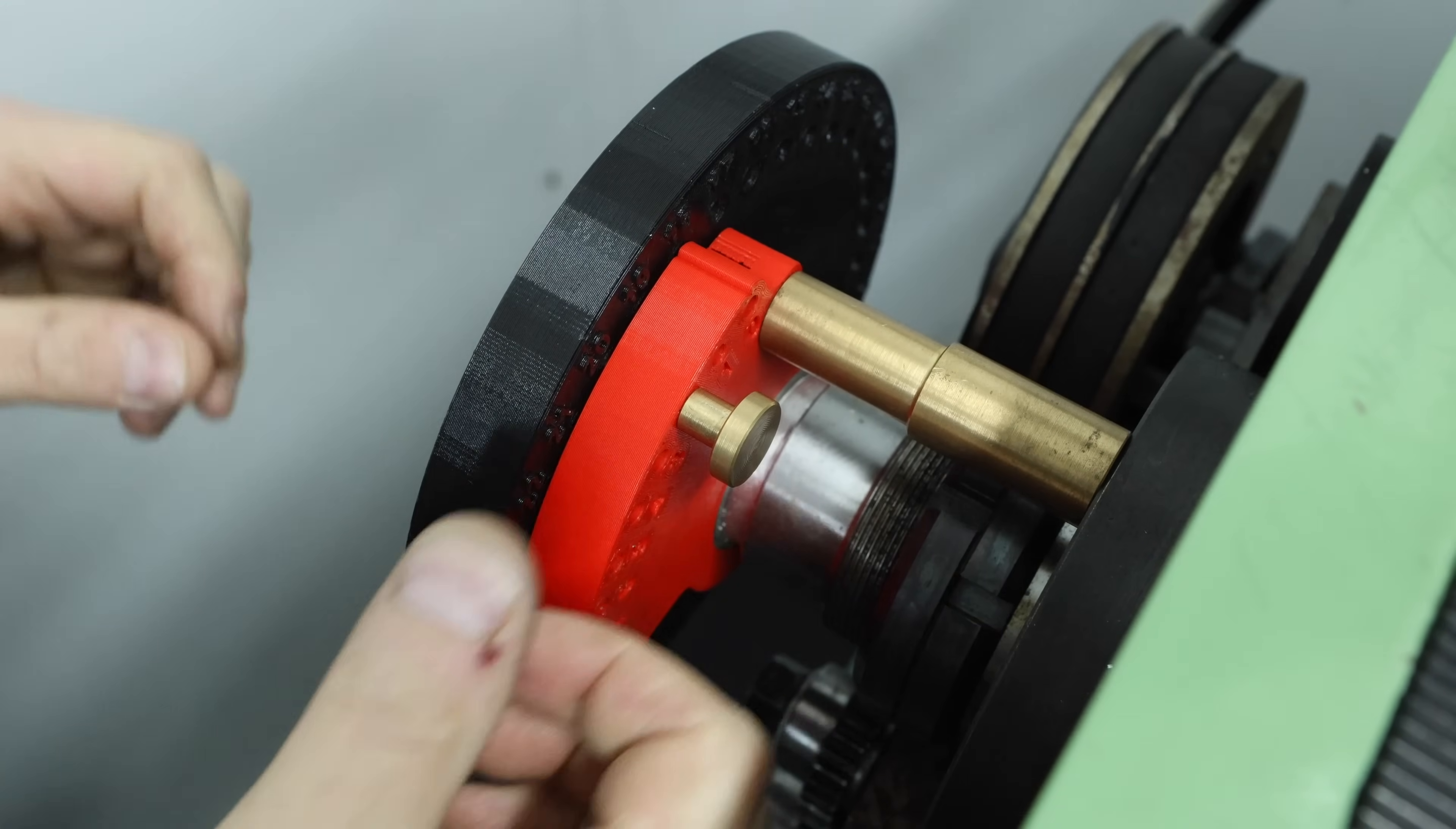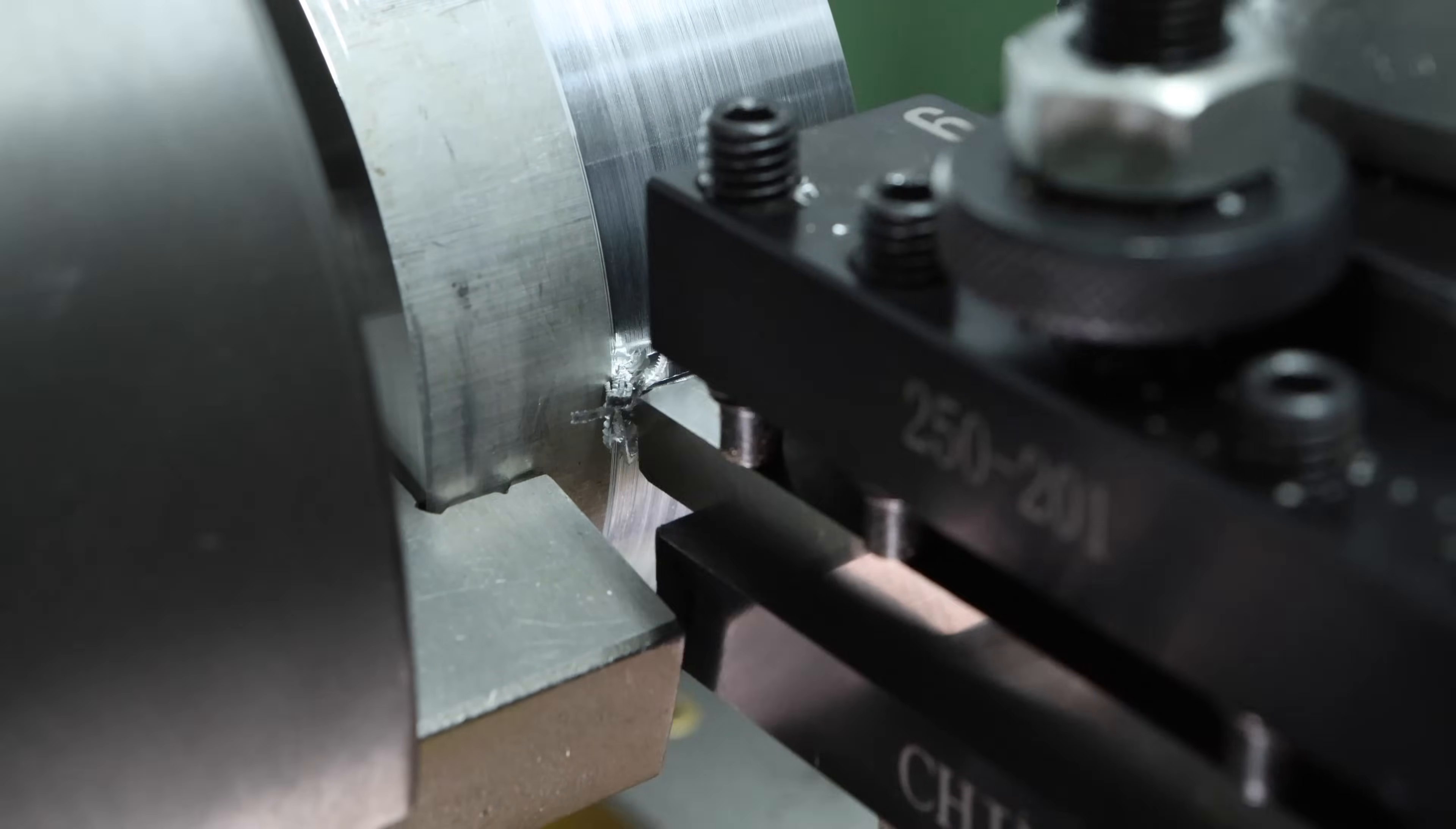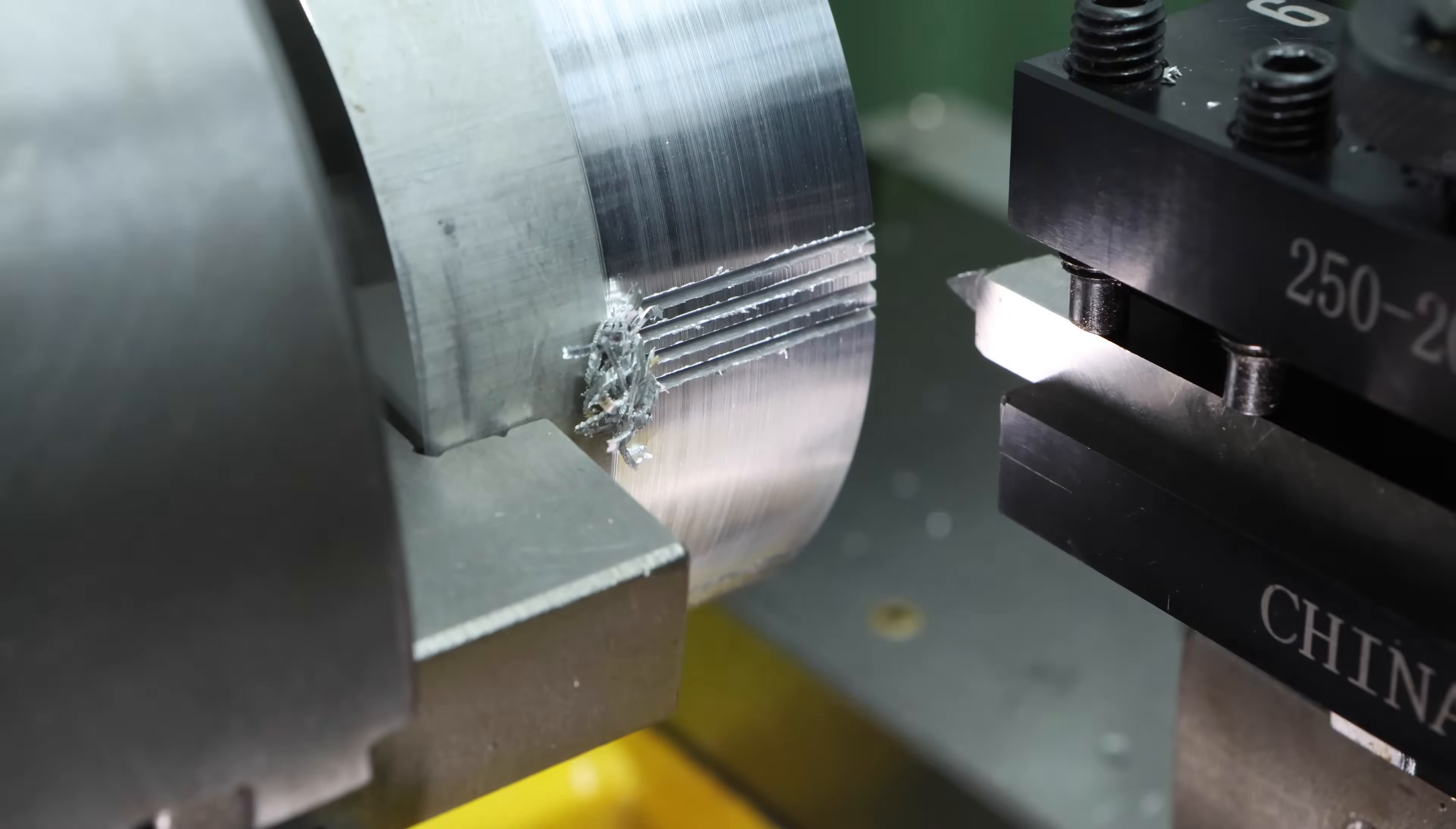Now that first groove is finished it's time to index our work around. And in this case I'm going to be indexing it around by three degrees. And then it's just a case of rinse and repeat. And obviously we continue with this process until we've made it all around the cylinder. Now I won't subject you to that. Instead we'll go back to our original part and cut the grooves in the other direction.